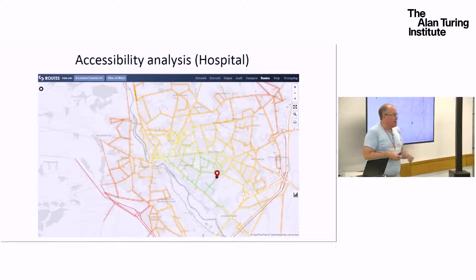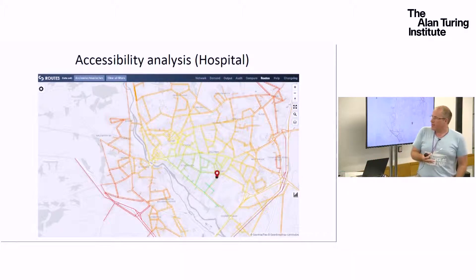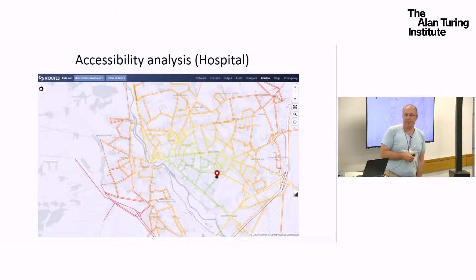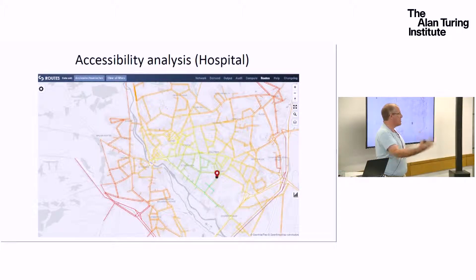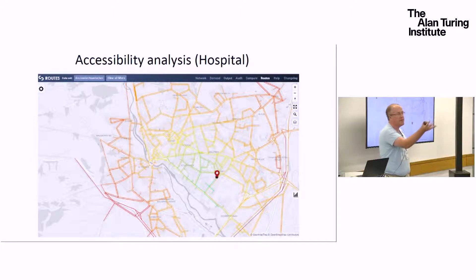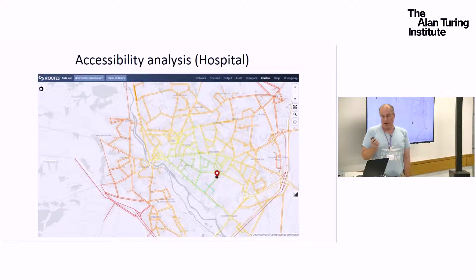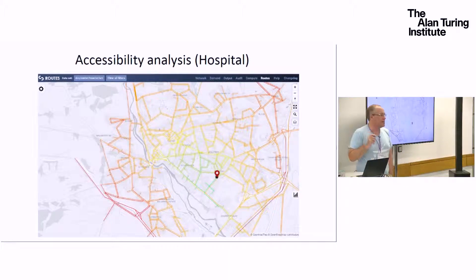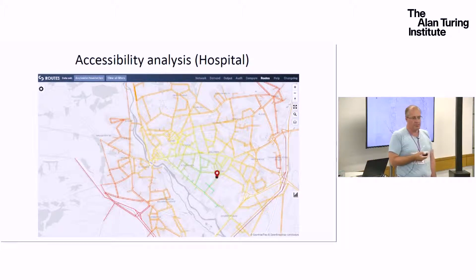Once you've got that kind of data you can do things like accessibility analysis, and the data can be used by different agents. If you were building a development you'd be interested in the accessibility for your development. There's no reason those tools — which are publicly funded — can't be made available.